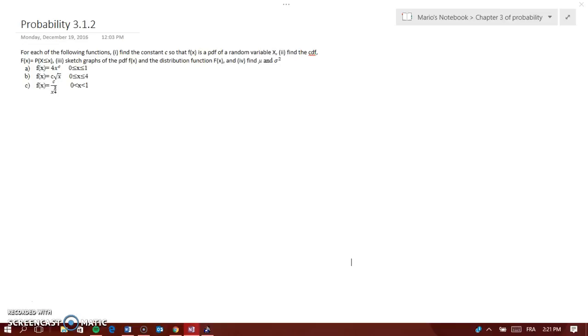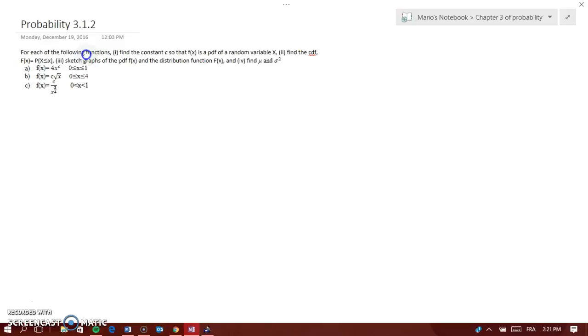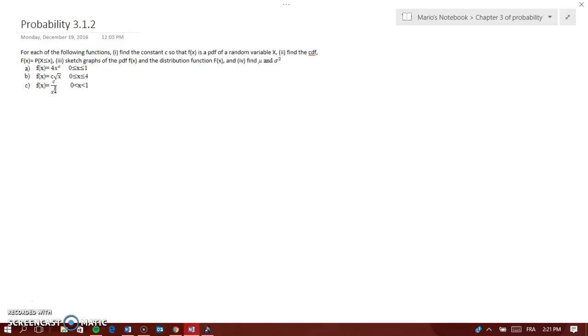First, how do we find C? We find C for part A. Remember this is continuous, so we're going to do the integral. This is from 0 to 1, so it's 0 to 1, and the function is 4x to the power of C, so 4x to the power of C, dx.